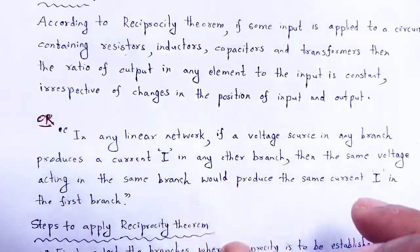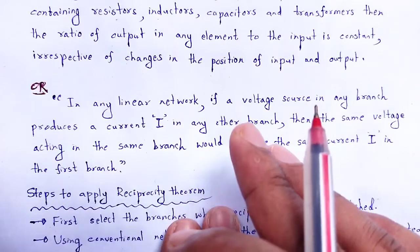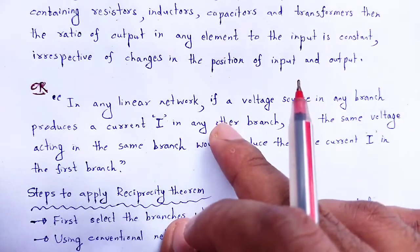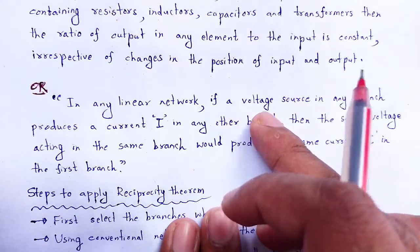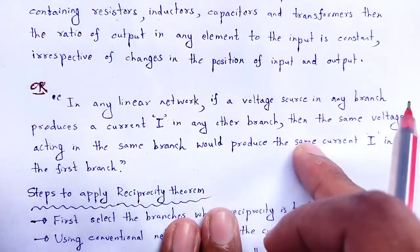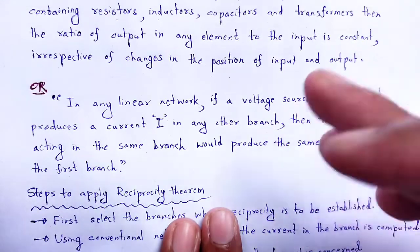In other words, in any linear network, if a voltage source in any branch produces a current I in any other branch, then the same voltage acting in the other branch would produce the same current I in that first branch.